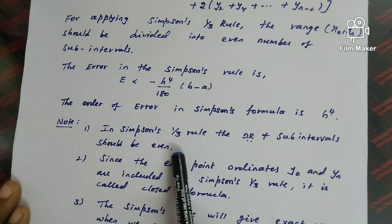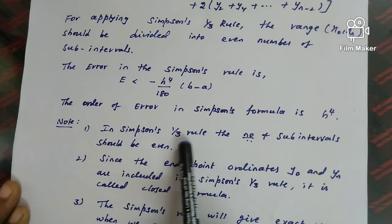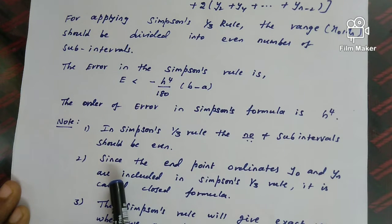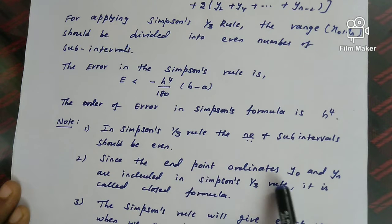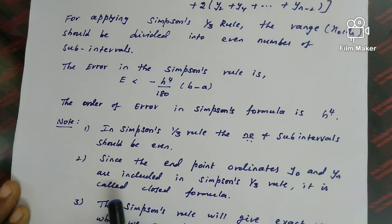Note 2: Since the end-point ordinates y₀ and yₙ are included in Simpson's 1/3 rule, it is called a closed formula.